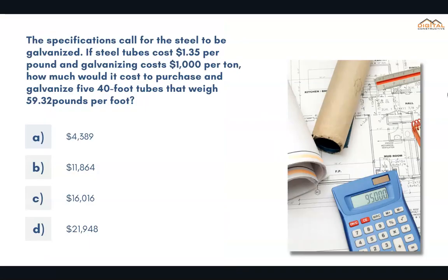The specifications call for the steel to be galvanized. If steel tubes cost $1.35 per pound and galvanizing costs $1,000 per ton, how much would it cost to purchase and galvanize five 40-foot tubes that weigh 59.32 pounds per foot? The correct answer is D: $21,948.